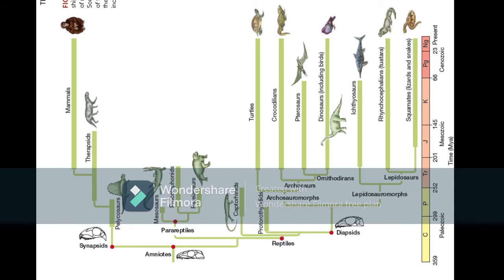Looking at synapsids, they became pelycosaurs, from which therapsids evolved — the mammal-like reptiles. From therapsids, mammals eventually evolved, and humans also evolved from those organisms. This evolutionary pattern is complex, and we only have partial evidence, with many missing links. For example, we still don't have definitive proof of exactly from which organisms chordates evolved.